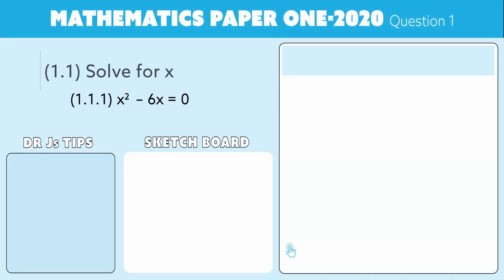Okay folks, we're looking at question one. 1.1 is always the solving of equations in the department's paper. Your tip here is always expect to find equations that you can solve in section one. Let's see what they are asking. They're saying to us in 1.1 solve for x. In 1.1.1 the equation they're giving us is x squared minus 6x equals zero.